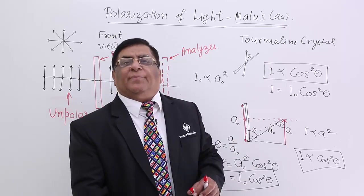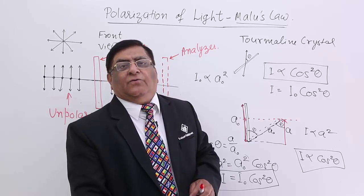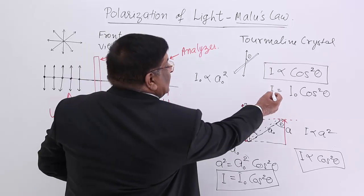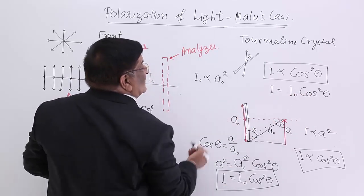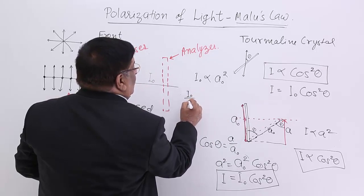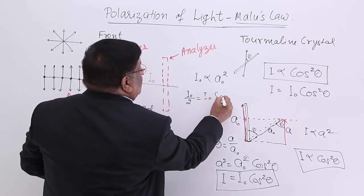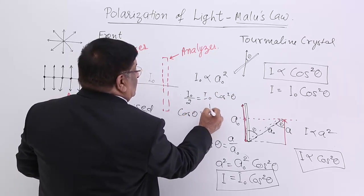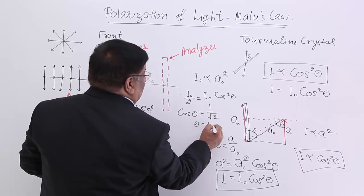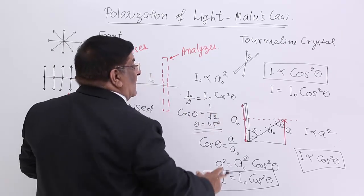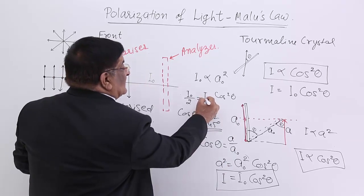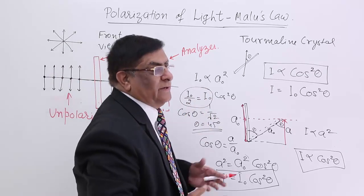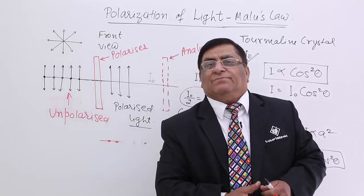Now with Malus's law, it is sometimes asked: what should be the angle which makes the intensity half? We write I = I₀ cos²θ, and the intensity has to become half, that is I₀/2. So I₀/2 = I₀ cos²θ, which gives cos θ = 1/√2, so θ = 45°. When we turn it by 45 degrees, the intensity becomes half of the original intensity.